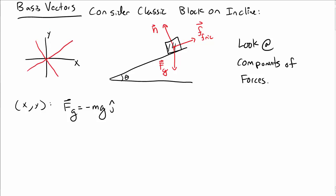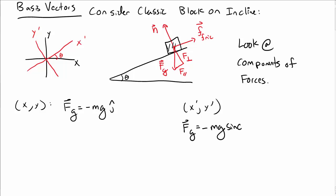You can also choose an x-prime y-prime coordinate system that's tilted at angle theta with respect to the xy system. In the x-prime y-prime coordinate system, the force of gravity has to be broken up into components perpendicular and parallel to the incline. Those components turn out to be minus mg sine theta in the i-hat direction and minus mg cosine theta in the j-hat direction — the new i-hat and j-hat. This is of course the same force; we're just writing it in different coordinate systems.